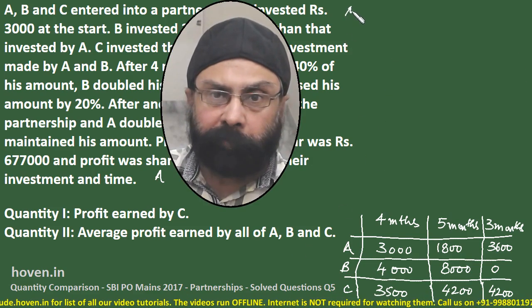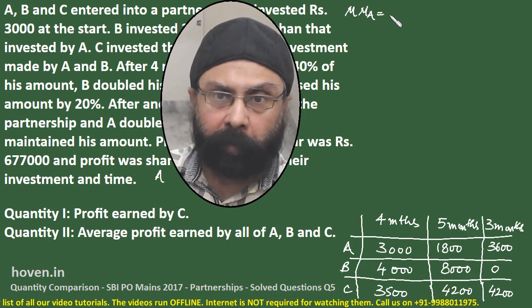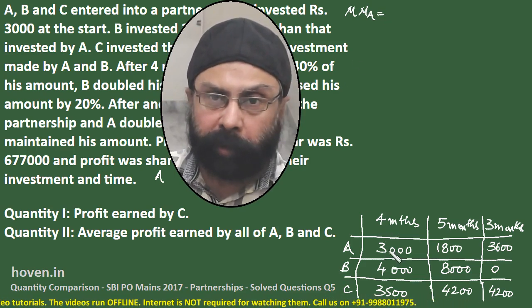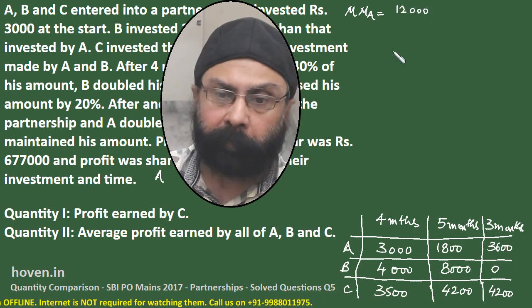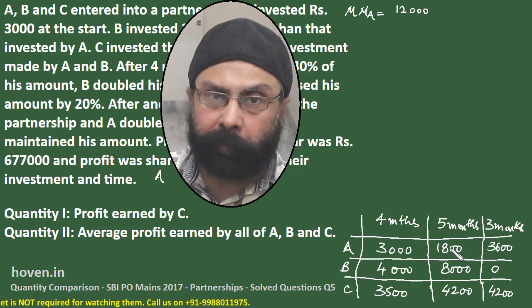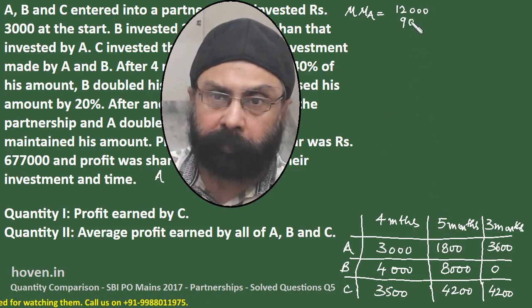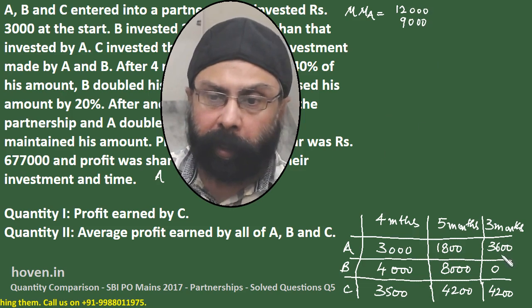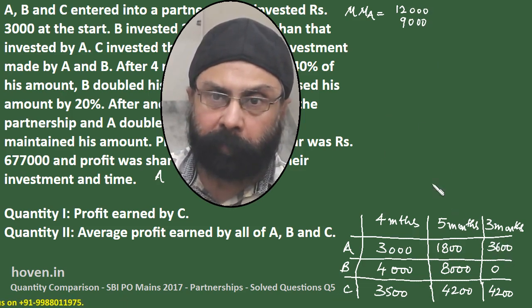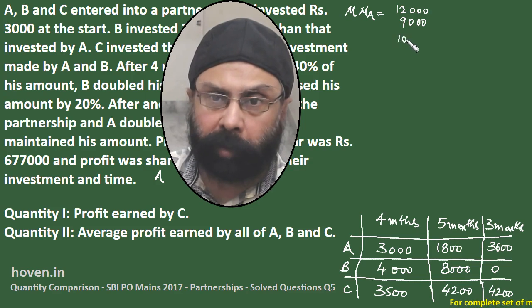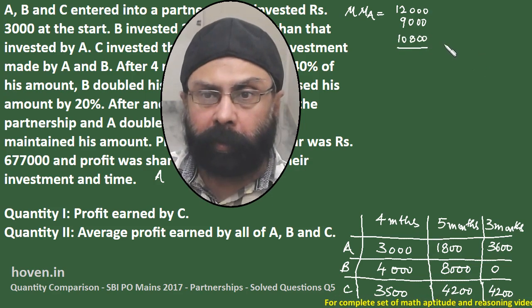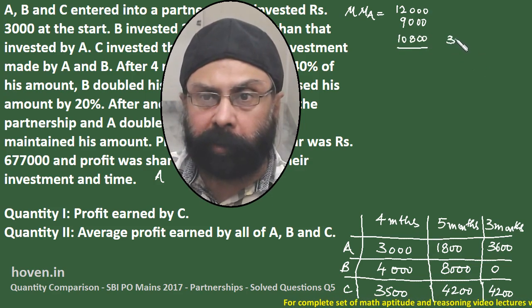Money months of A: 4 months × Rs. 3000 = 12000, plus 5 months × Rs. 1800 = 9000, plus 3 months × Rs. 3600 = 10800. The total money months for A is 31800.